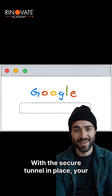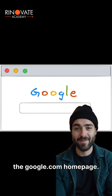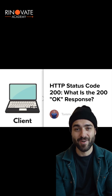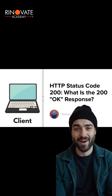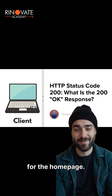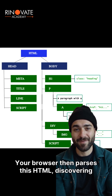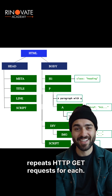With the secure tunnel in place, your browser sends an HTTP GET request for the google.com homepage. Google's server responds with an HTTP 200 OK status and the actual HTML code for the homepage. Your browser then parses this HTML, discovering additional files like images and scripts, and repeats HTTP GET requests for each.